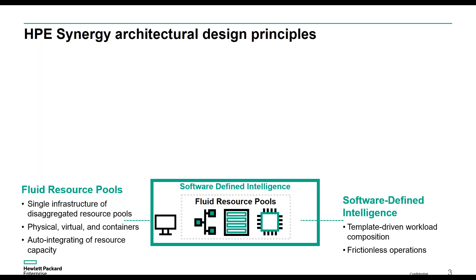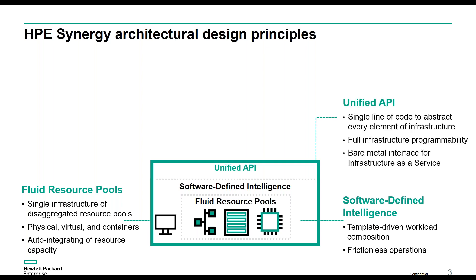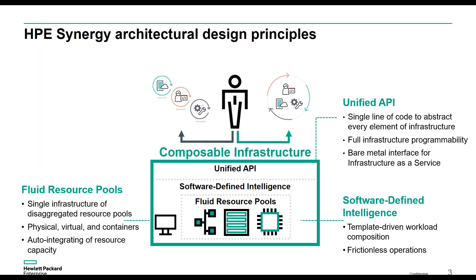Second, we need to have software-defined intelligence. The software-defined intelligence allows us to use templates to compose our workloads as well as update them in the future. Third, and probably most critical, is a unified API. This unified API is the gateway that allows us to control the hardware via software — to truly provision your infrastructure like code. These are the keys to a composable infrastructure.